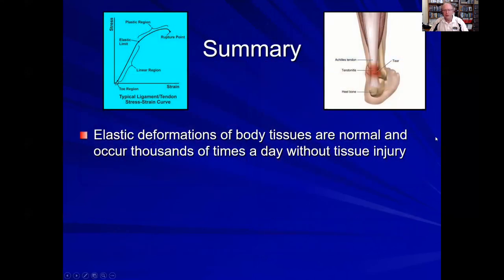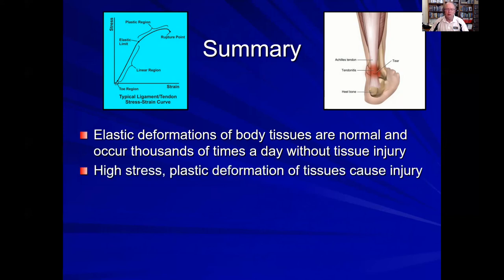In summary, elastic deformations of the body occur with each step and each activity, thousands of times a day. They are normal and will occur without injury to the body's tissues. However, if we have high loads and high stresses, we reach the other end of the stress-strain curve where plastic deformations occur — whether that's a ligament tear, a tendon complete rupture, a stress reaction, stress fracture, complete fracture of bone, cartilage tear, or skin injury. These plastic deformations are the injury-producing tissue injuries that bring patients into our office with foot and lower extremity conditions such as plantar fasciitis, posterior tibial tendonitis, Achilles tendon injuries, or fractures.